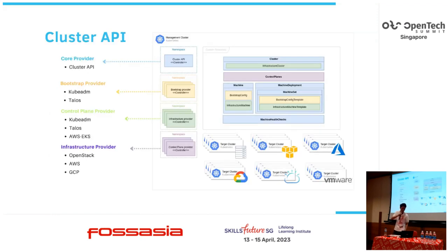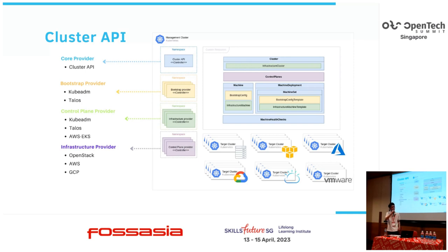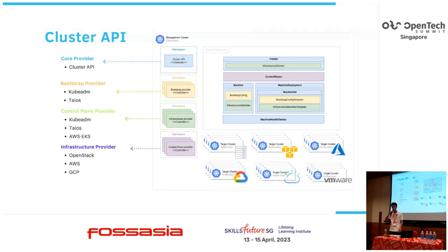Let me show some diagrams of the components of Cluster API. Cluster API works by separating into providers. What the providers do is make the system very modular, so that you can plug in different infrastructure and different bootstrap machine configurations.